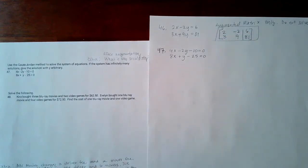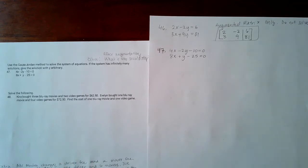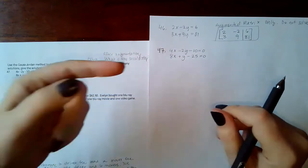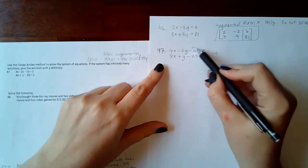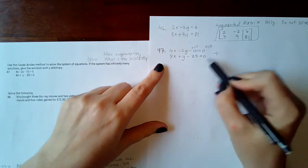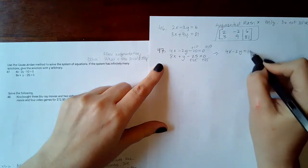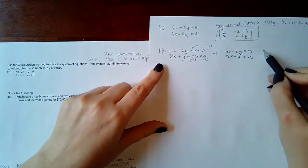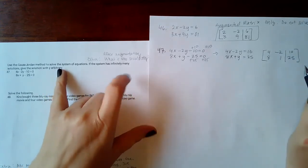Now for number 47, this problem is actually two problems on the final exam. The first thing is we want to put this in augmented matrix. Before I can do that, I have to get the constant to the other side on both equations. So I have 4x minus 2y equals 10, and 8x plus y equals positive 25. The augmented matrix would be 4, negative 2, 10, 8, 1, and 25. Now for this problem it just says for me to solve it.